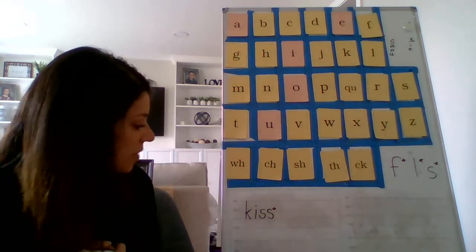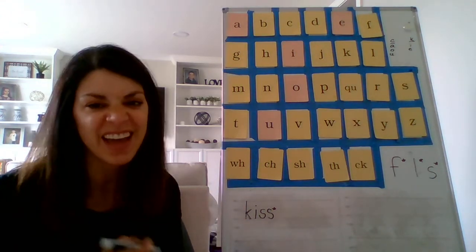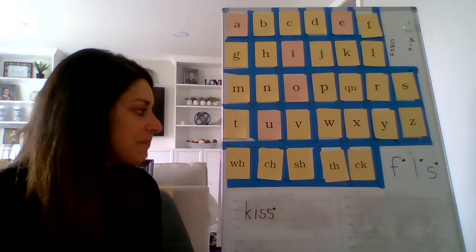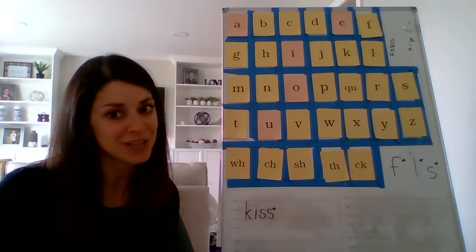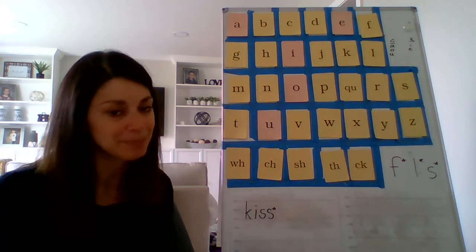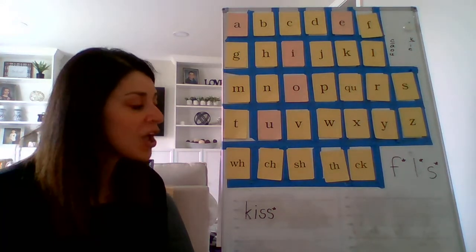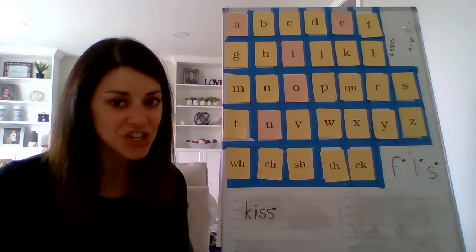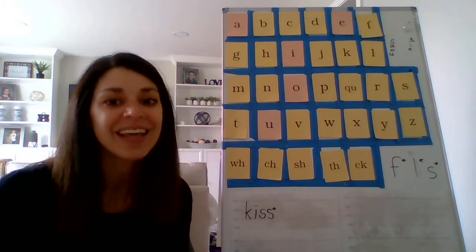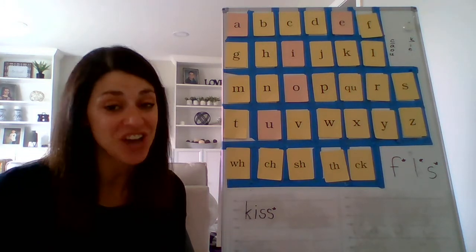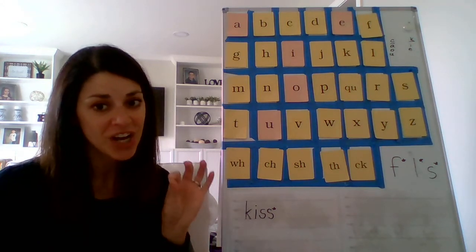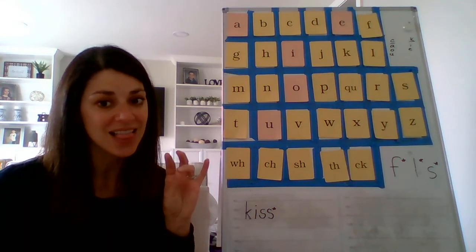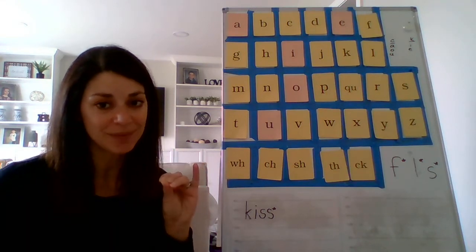All right, let's try one more, and then we're going to write a sentence that has some more to practice inside of it. I'm going to throw a digraph in this time. What if I wanted to spell the word shell, like a seashell? Shell — sh, ah, shell.